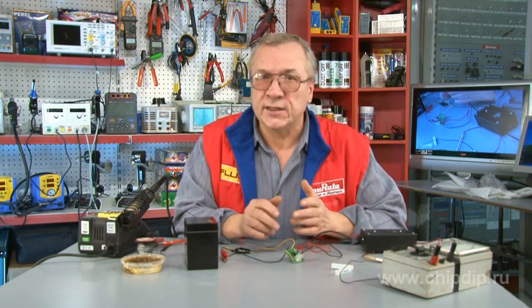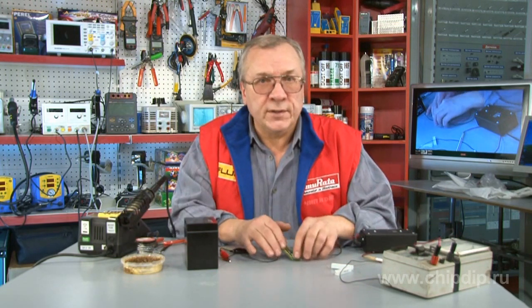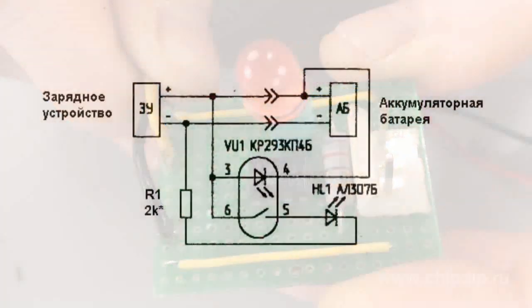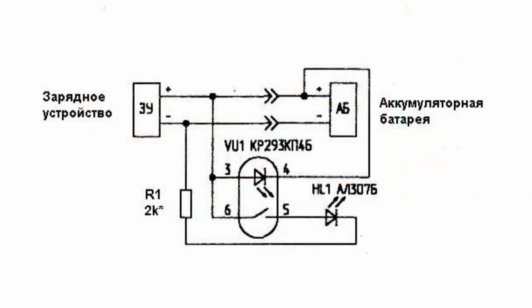Anyone wishing to make use of a simple but very powerful battery charge current indicator can easily build one at home. The circuit is so simple that the only complex component here is a high-power optoelectronic switch.